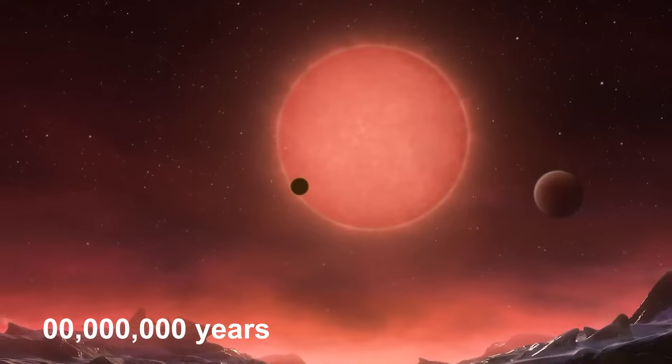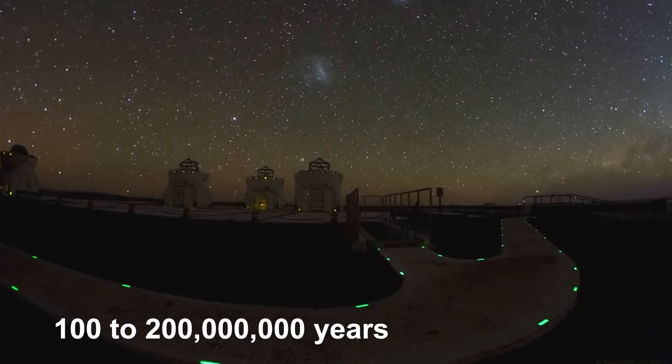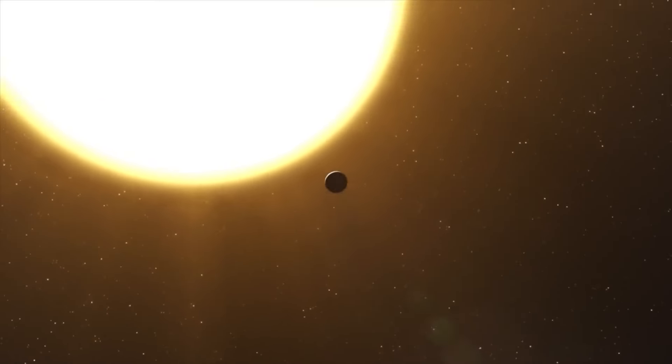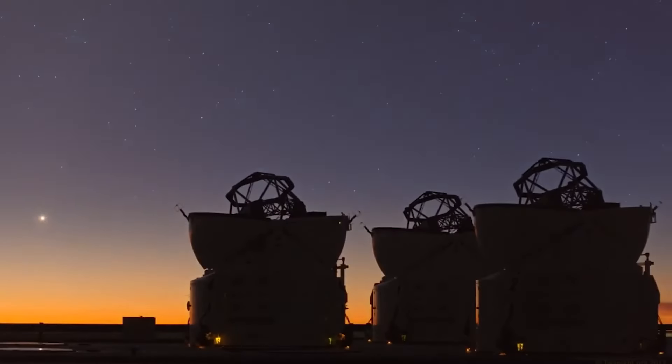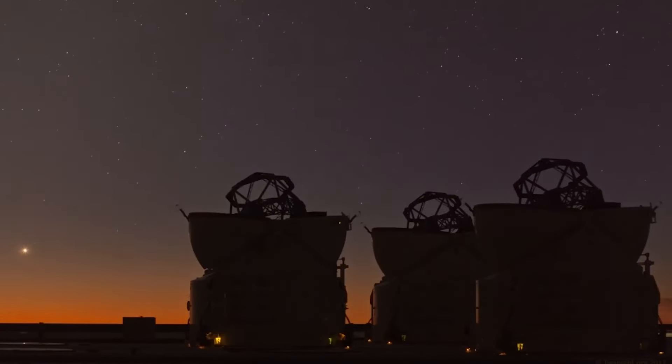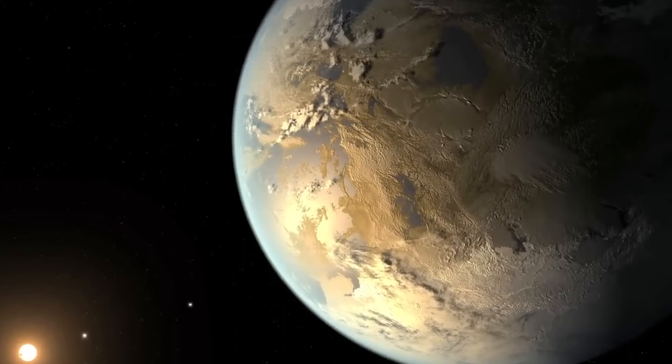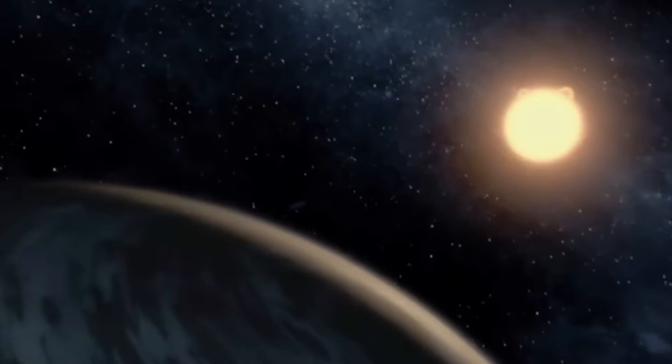During the first 100 to 200 million years after its formation, Proxima b might have lost about one ocean's worth of water due to the early intense radiation. The fate of the water and atmosphere after this period remains under investigation.